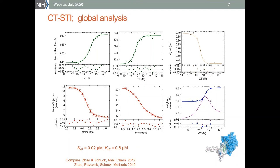The software I used for the global analysis was created by Peter Schuck here at NIH, and it's called SEDPHAT. This is a free software that can be used to analyze data from many different techniques, with a long list of binding models. The analytical chemistry paper by Joy Zhao and Peter Schuck describes the global analysis approach implemented in SEDPHAT and also contains a much more detailed analysis of this particular protein system. I would like to refer everybody interested in learning more about global analysis to this paper.